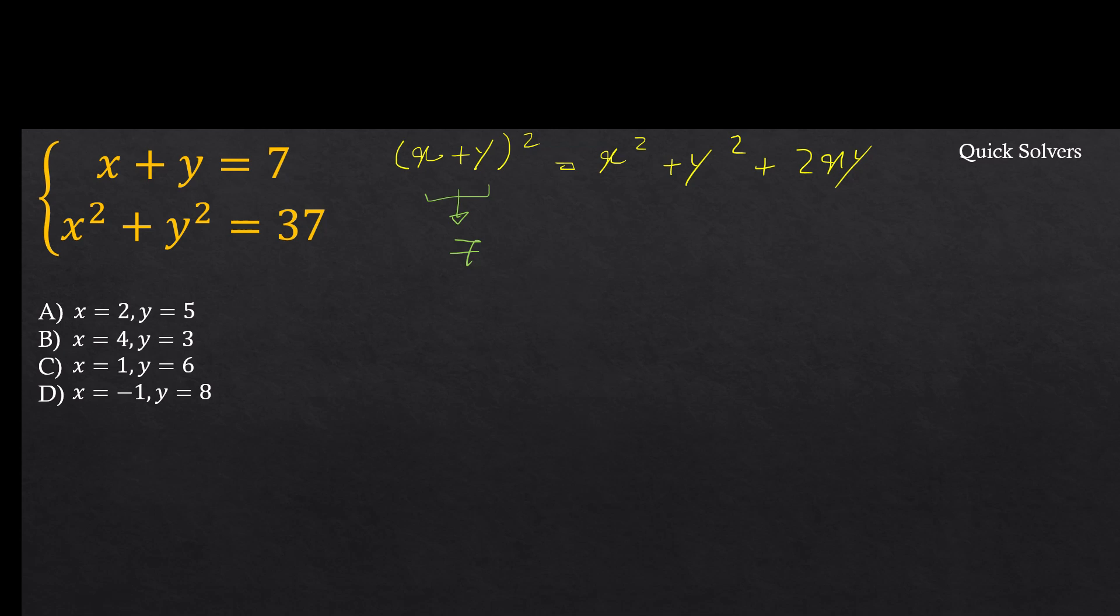Here we know x + y is 7, we know x² + y² is 37, and the only thing that we don't know is xy. So I'll try to isolate xy. For that, I'll rearrange: (x + y)² - (x² + y²) = 2xy.